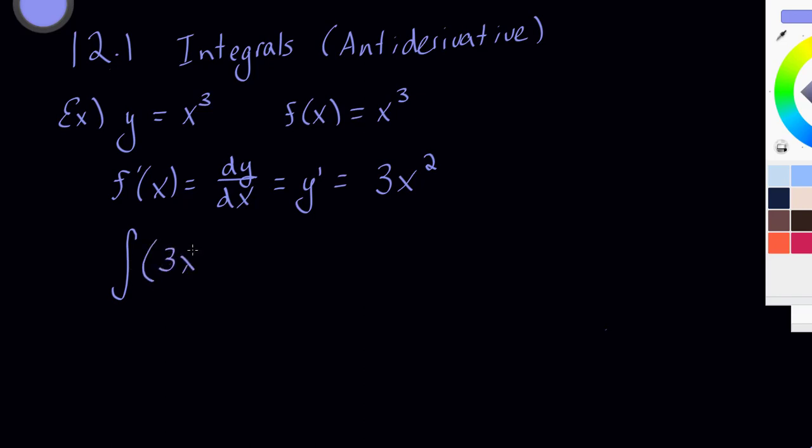3x squared dx. What we're saying is that little notation is asking us to find the anti-derivative. What this is, is it's also called an integrand or integral.